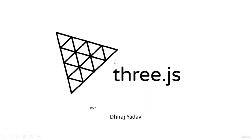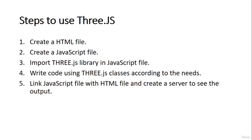Hello everyone. Welcome to this lecture. In this lecture, we are going to discuss the steps to use JavaScript with Three.js. First, we need to create an HTML file. Then we need to create a JavaScript file. In this JavaScript file, we are going to import the Three.js library using various ways. Then we need to write some code using Three.js according to what we want to show, and then link that JavaScript file with the HTML file. Finally, we need to create a server to see the output.